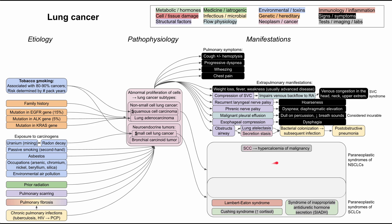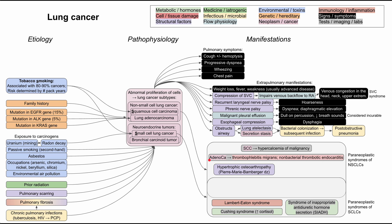The paraneoplastic syndromes of non-small cell lung cancer include hypercalcemia of malignancy, most commonly seen in squamous cell lung cancer. Thrombophlebitis migrans and non-bacterial thrombotic endocarditis are most commonly seen in lung adenocarcinoma. Any non-small cell lung cancer can cause hypertrophic osteoarthropathy, which causes clubbing of the fingers and toes, as well as swelling and pain in the joints and bones.